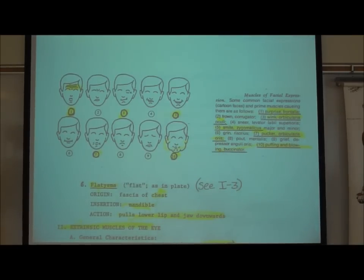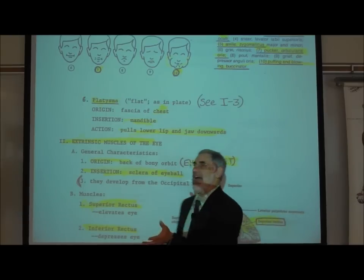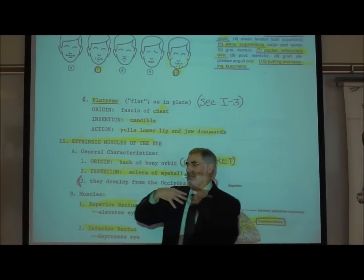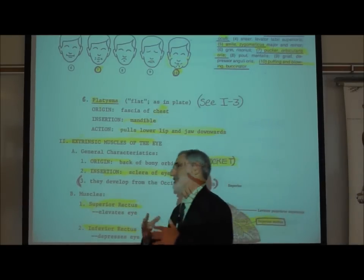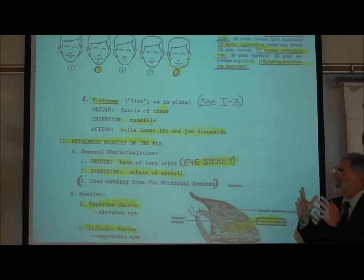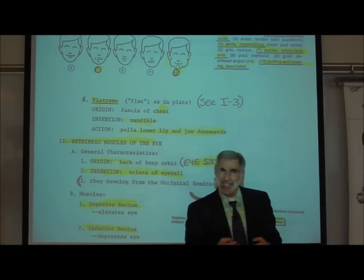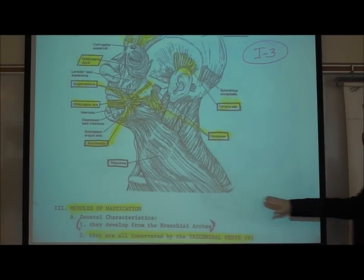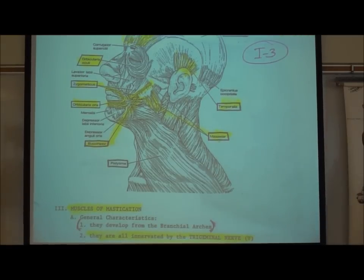Another facial muscle is the platysma. The root platy means flat — like the word flatware. It originates on the chest and inserts on the mandible. In this case, it actually originates on the skin and inserts on the bone. Since what a muscle pulls on is what it inserts on, it pulls your mandible down. It doesn't have to be very strong because gravity would tend to pull it down. It's a very thin but quite broad muscle.